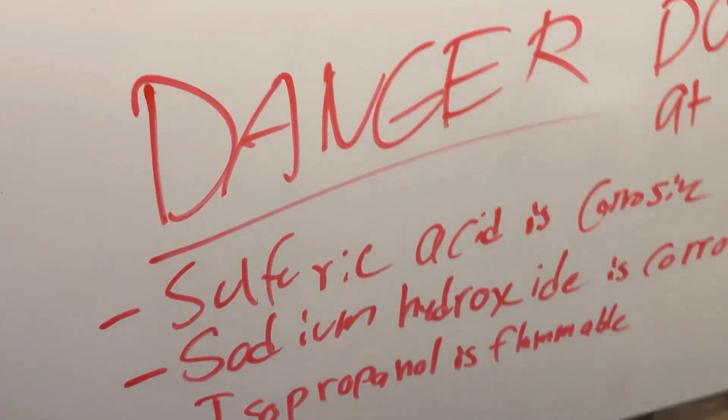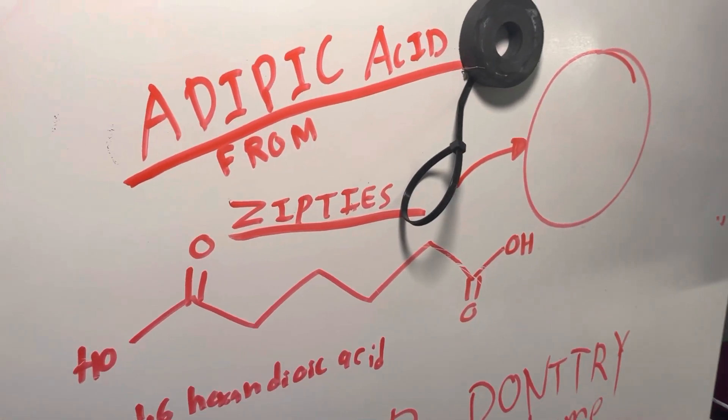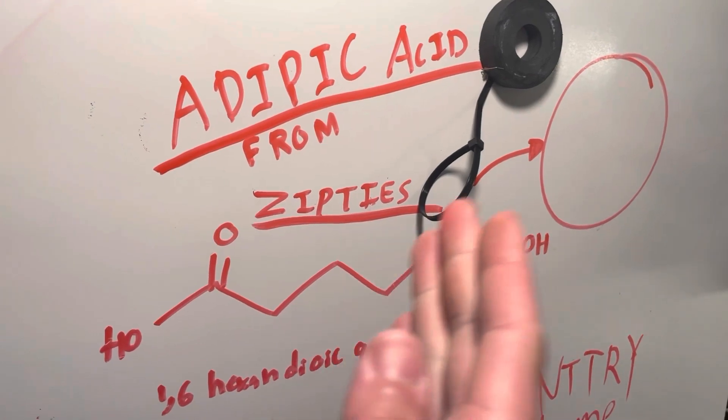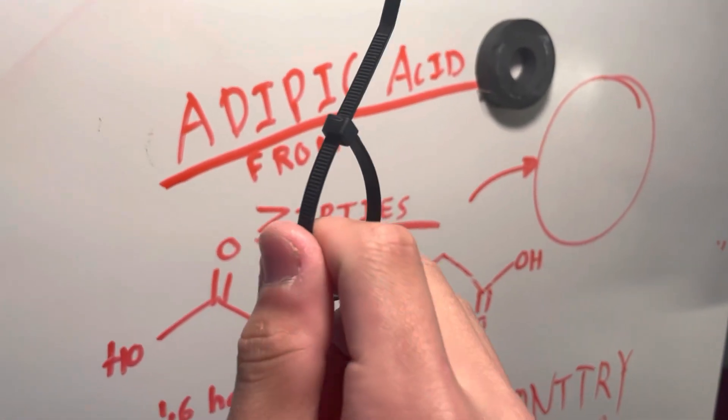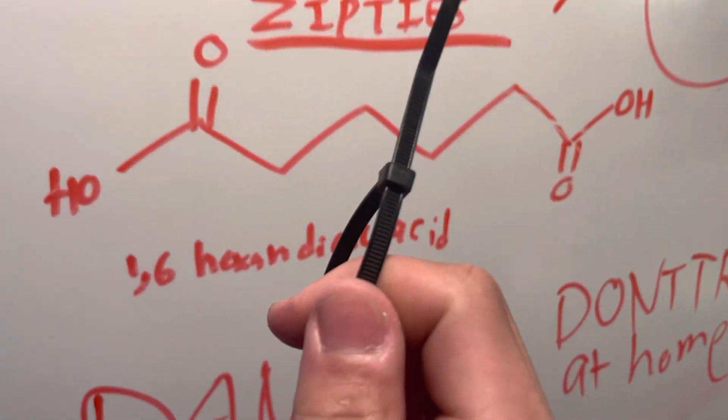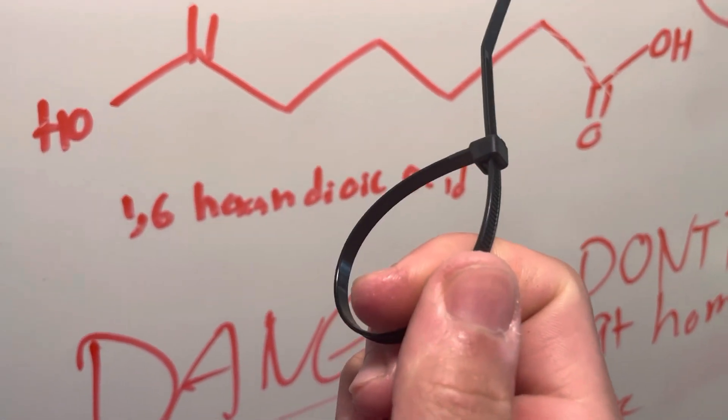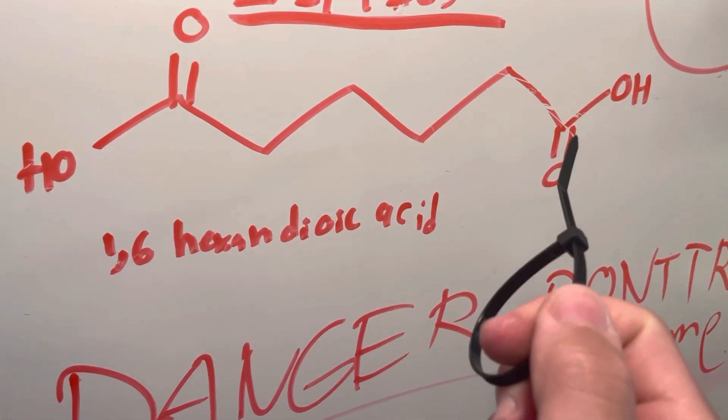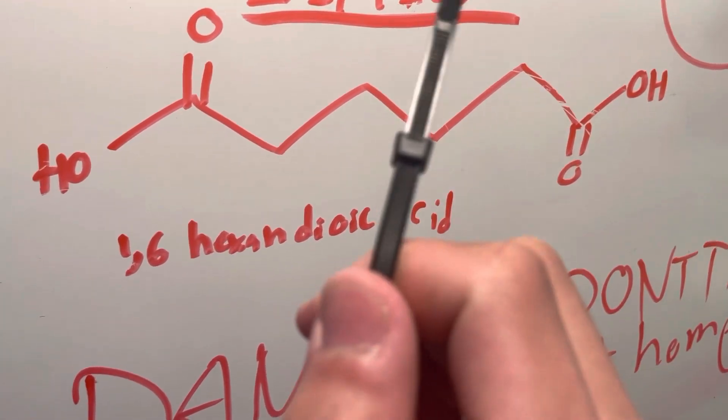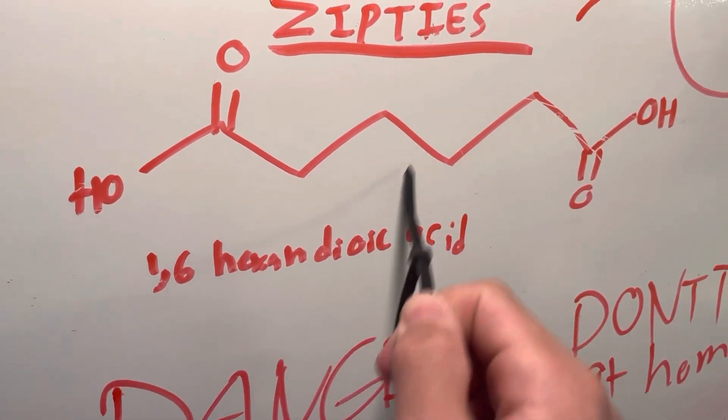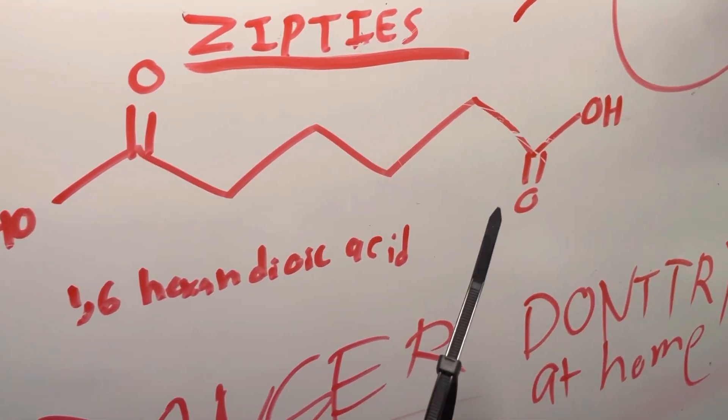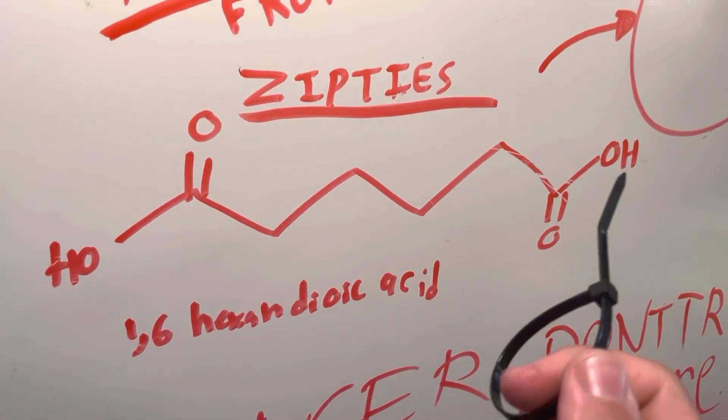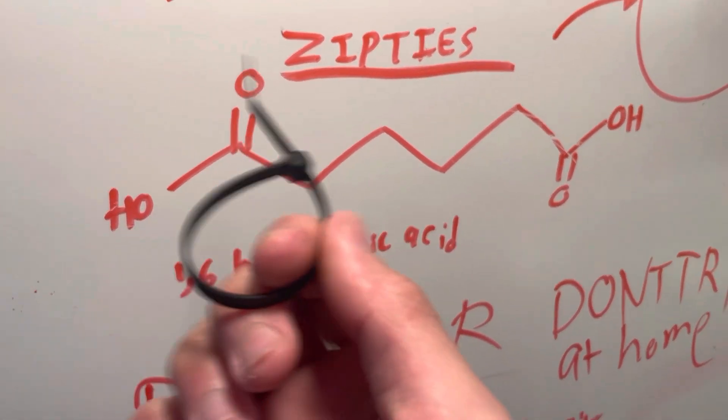Hooray! Hello, tryers! So today we'll be synthesizing adipic acid from zip ties, well, specifically Nylon-6-6, which it's called that because nylons are polyamides.